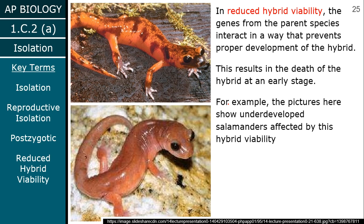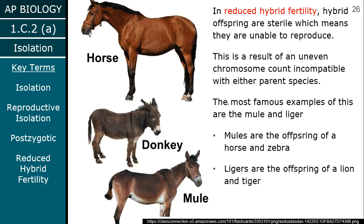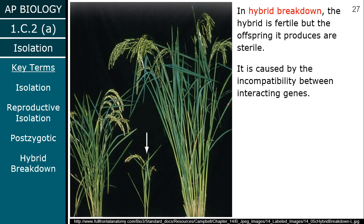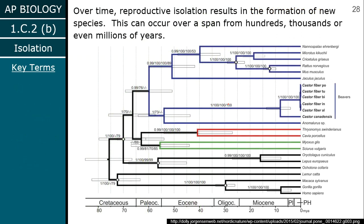Some hybrids work better than others, but generally if the hybrid is not able to reproduce and have offspring that are also able to reproduce, then it is not a species.